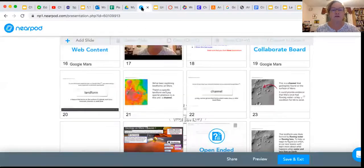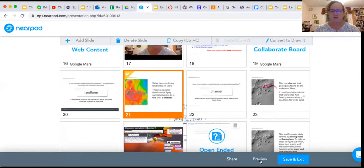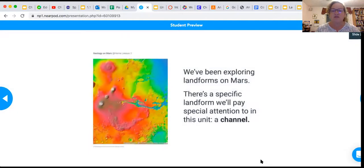So we're going to be looking at a specific one that geologists have found on the surface of Mars and that they're investigating. We're going to pay really close attention to this specific landform on Mars, and it's called a channel.